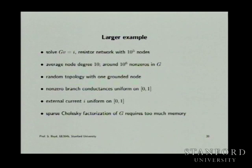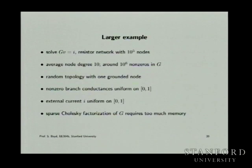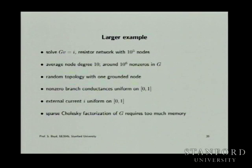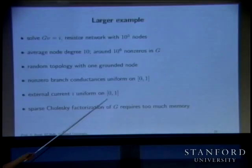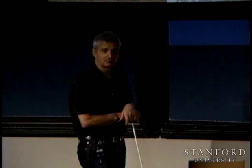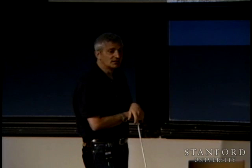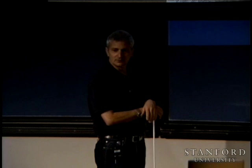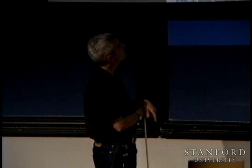Here's a real example: a resistor network with 100,000 nodes, random graph with average 10 connections per node, giving about a million non-zeros in the matrix G. One node is grounded; currents are injected at each node chosen uniformly on [0,1], and resistor values are also uniform on [0,1]. If you try a sparse Cholesky factorization using the approximate minimum degree ordering, you get too much fill-in.